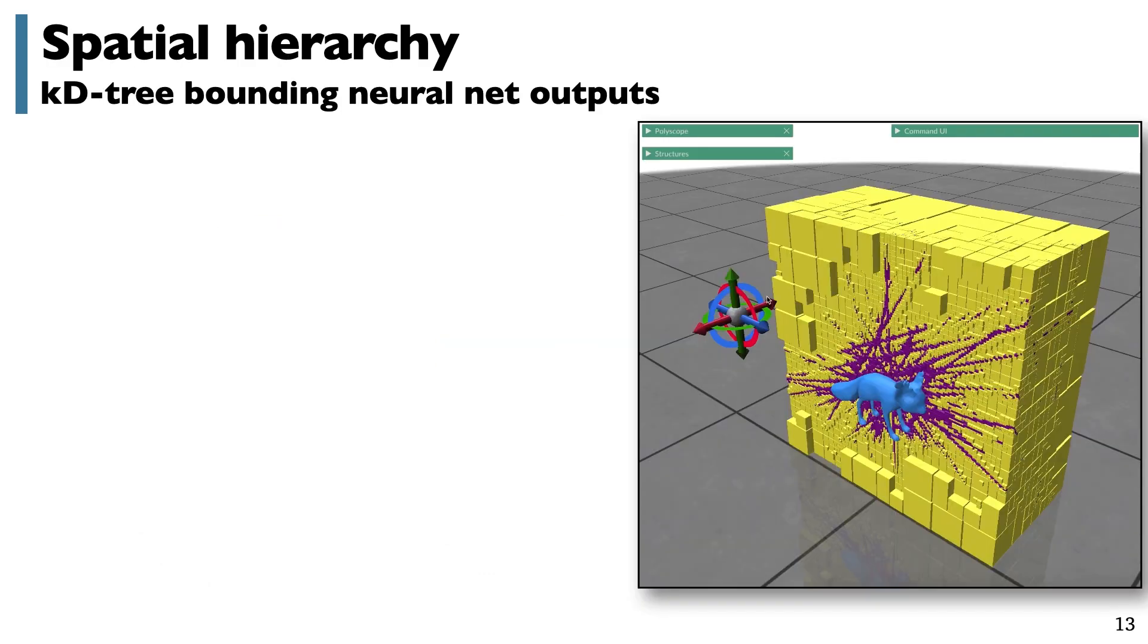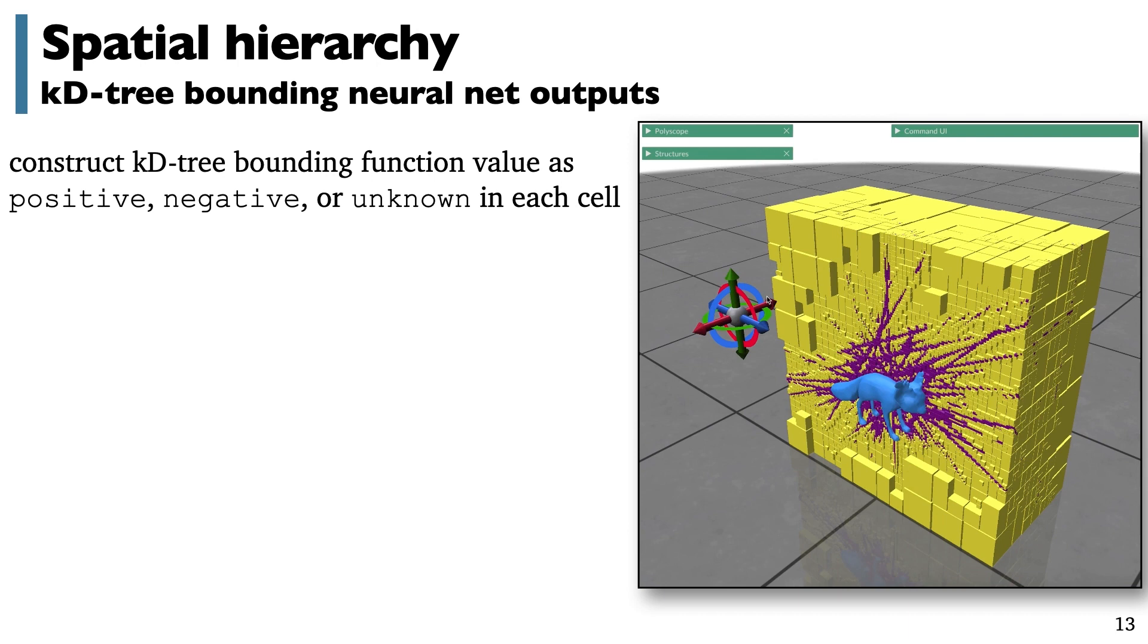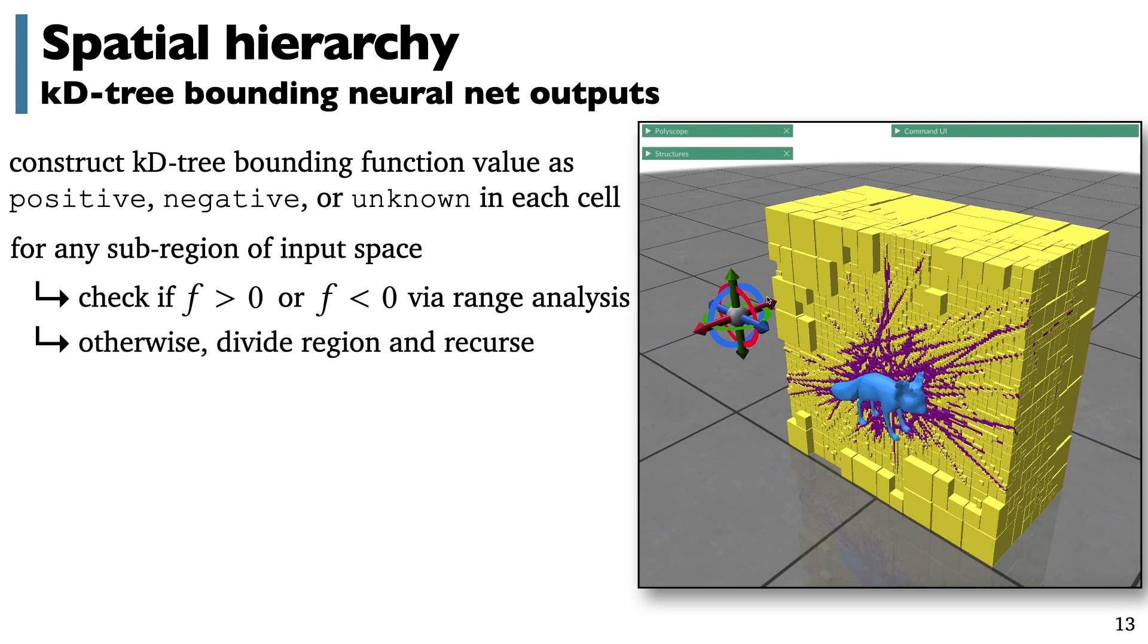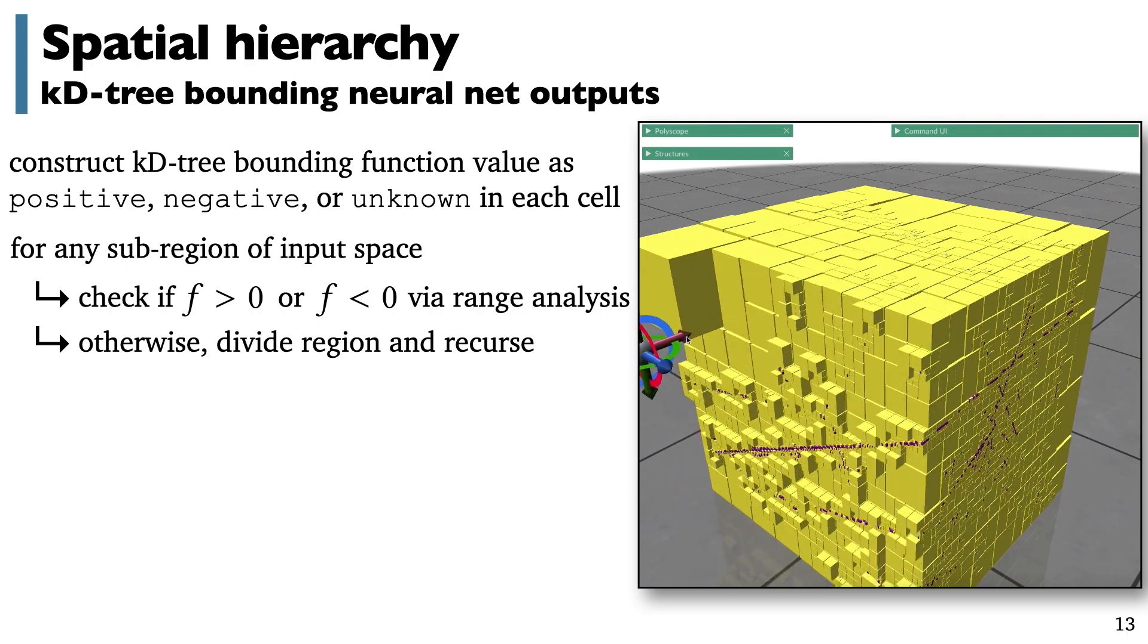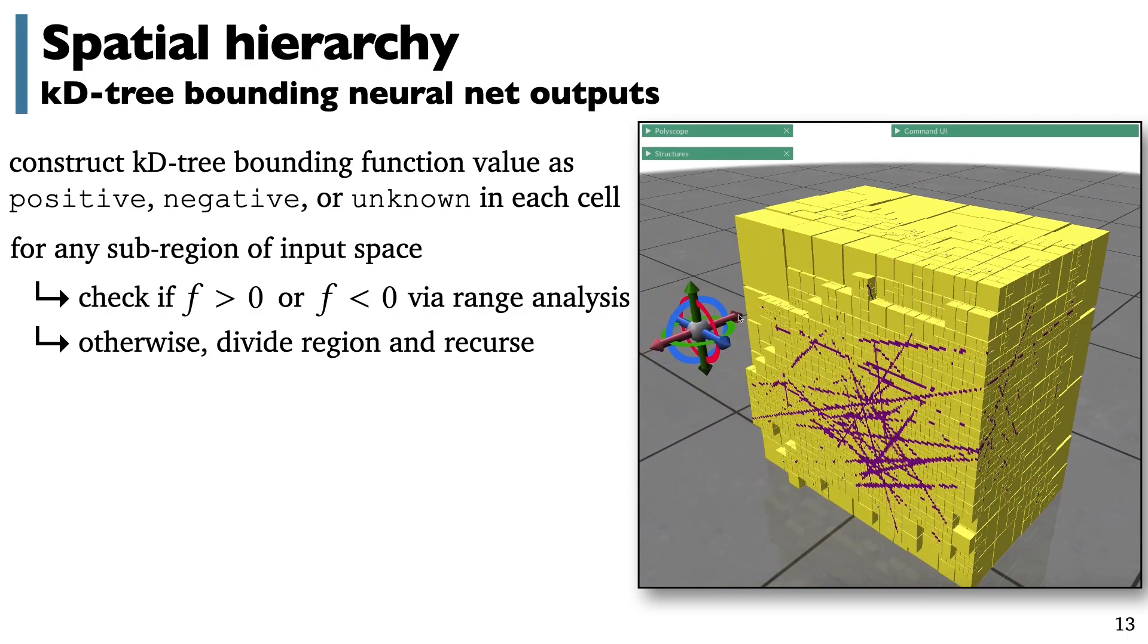To really put this range analysis to work, we can use it to construct spatial acceleration hierarchies, like KD trees, over our implicit surfaces. In these KD trees, each cell represents a region of 3D space, and we use range analysis to bound the function in that region as strictly inside or outside the surface. If a cell straddles the surface, or range analysis is ambiguous, we recurse into a smaller cell.